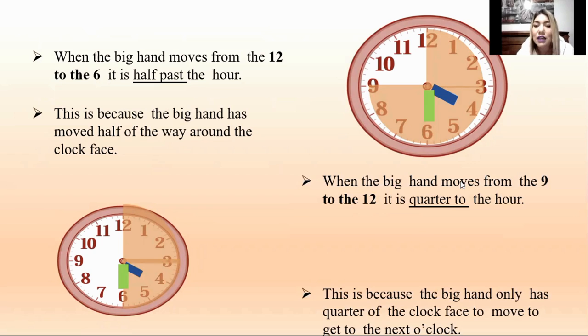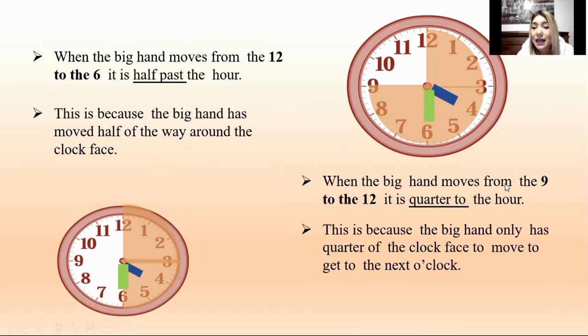The next one, when the big hand moves from the nine to the twelve, it is quarter to the hour. This is because the big hand only has quarter of the clock face to move to get to the next clock. We have from the nine into twelve, we have to use the quarter to. En este caso, cuando vamos a retroceder, cuando vamos a decir veinte para las tres, diez para las cuatro, acá usamos nosotros quarter to. Un cuarto para las dos, un cuarto para las tres, y esto es de nueve a doce.